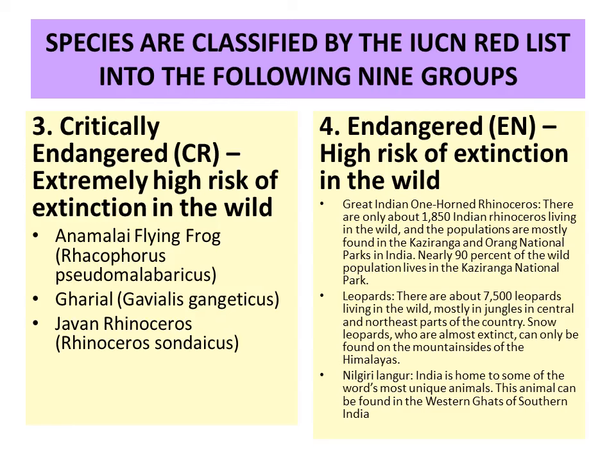Third is critically endangered — an extremely high risk of extinction in the wild. Very few individuals are present, normally thought to be less than 250. Examples include the gharial (Gavialis gangeticus), Javan rhinoceros, and the Arnoux's beaked fox.